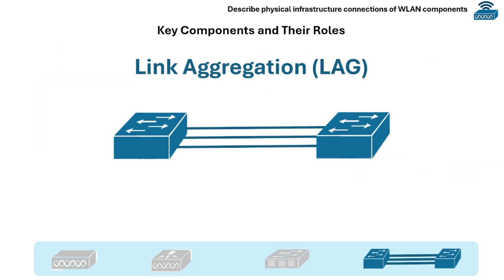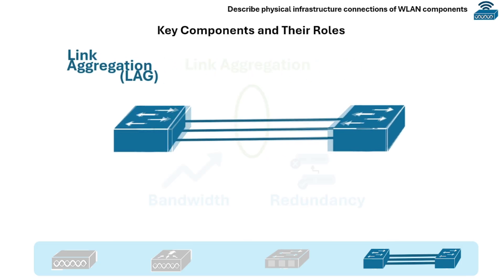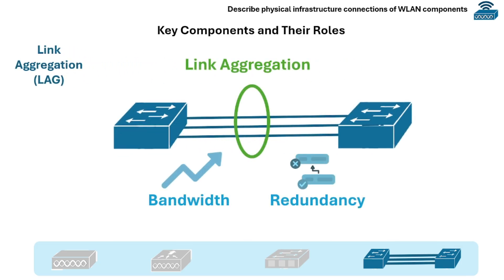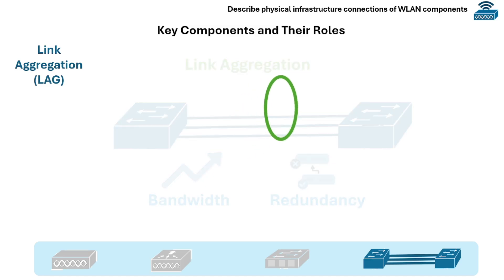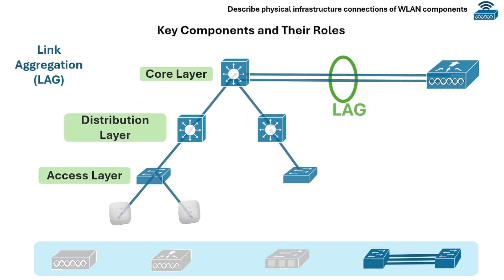Last is link aggregation. A link aggregation group, or LAG, combines multiple physical switch ports into one logical link to increase bandwidth and provide redundancy. WLCs often support LAG to connect multiple Ethernet interfaces to a switch, ensuring high availability and load balancing.